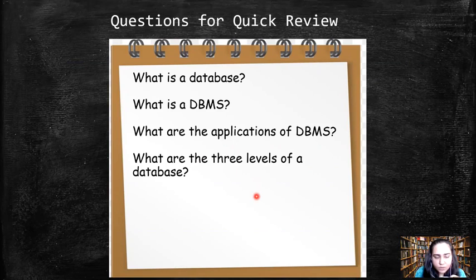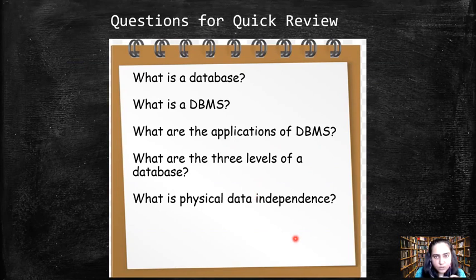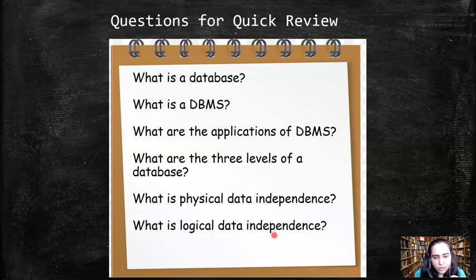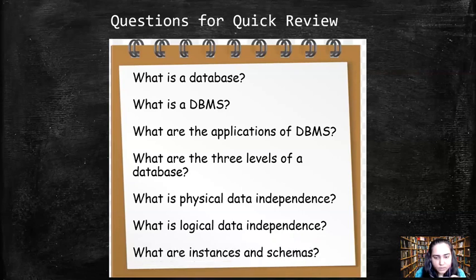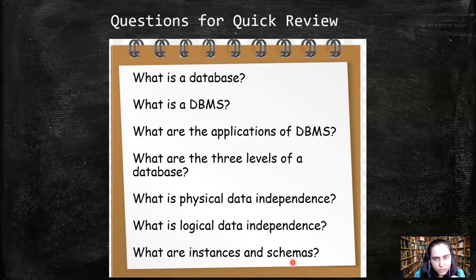What are the three levels of the database? The physical level, logical level, and view level. What is physical data independence? It is the independence to work on the logical level without having to worry about the complex data structures of the physical level. Logical data independence is the independence to work on the view level without worrying about how data works at the logical and physical levels. What are instances and schemas? An instance is the data stored within the database at a particular moment — it keeps changing. A schema is the overall design of the database and once created, it rarely changes.